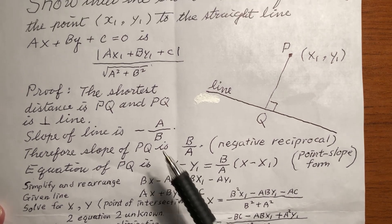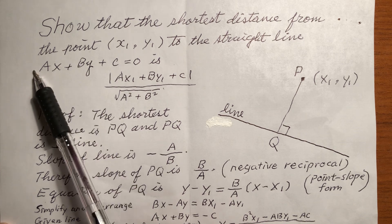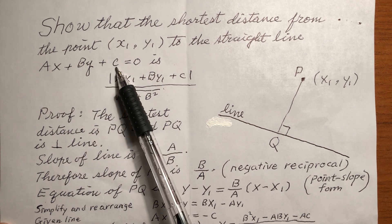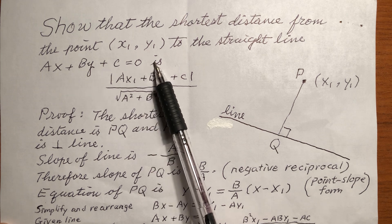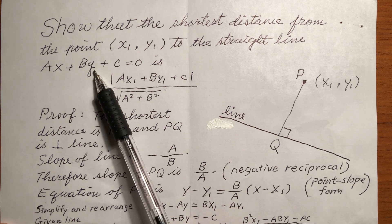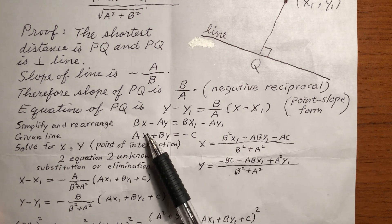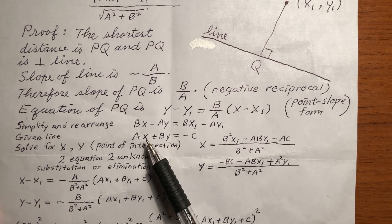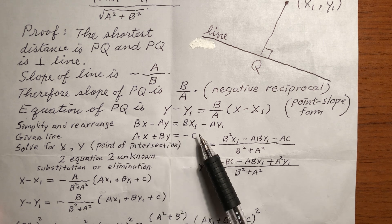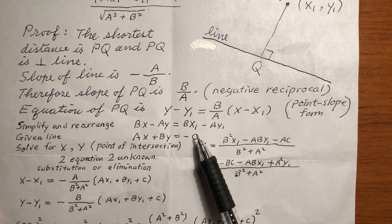Next, we rewrite the given line equation — moving c to the other side — so we have only x and y on the left-hand side, with the constant on the right-hand side.